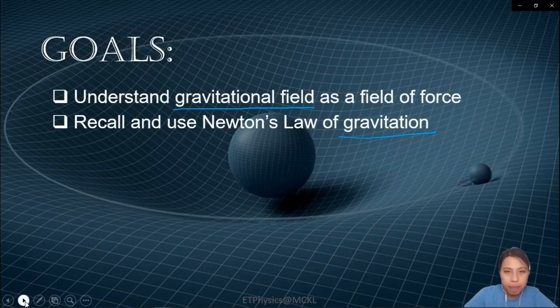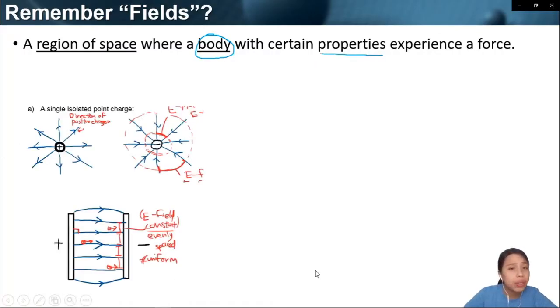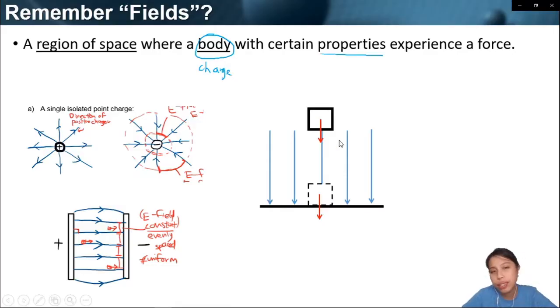Okay so first things first, fields. Do you remember fields? What are fields? We've seen that before in AS. If you want to say what is a field in general, you can say that it's a region of space where a body or some object with some properties experience a force. What properties? Well you have like what we call electric fields. So electric fields, your charge is the object. The property is like a charge coulomb. If you have a charge in an electric field then it's going to move around because there's an electric force acting on it.